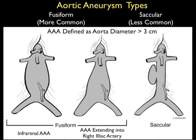This illustration shows the types of abdominal aortic aneurysms that may be encountered in clinical practice. The more common type is defined as fusiform, or diffuse dilatation of the abdominal aorta. Remember that an AAA is defined as an aortic diameter greater than 3 centimeters. Looking at the picture towards the far left, we see a diffuse dilatation of the aorta beginning below the renals and ending just above bifurcation into the iliac arteries.